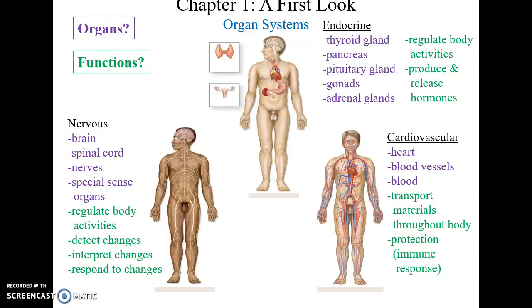The nervous system — including the brain, spinal cord, nerves, and special sense organs — is very important for detecting changes in the external and internal environment, interpreting and processing those changes, and responding to them, thereby helping to regulate many of our body activities.